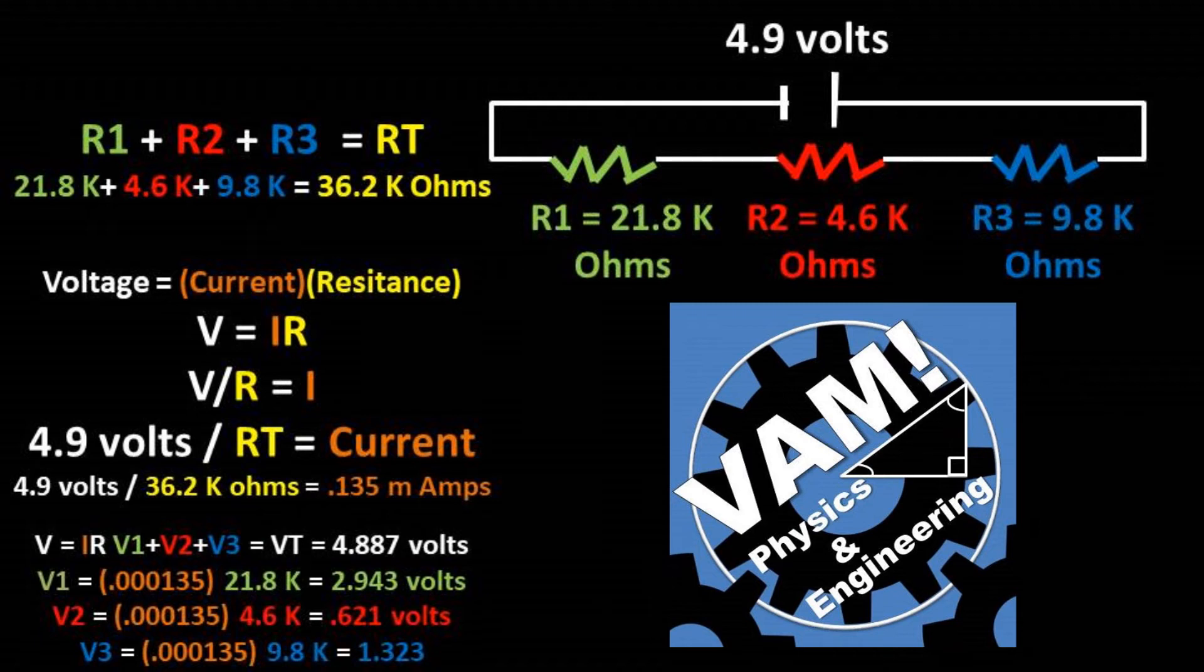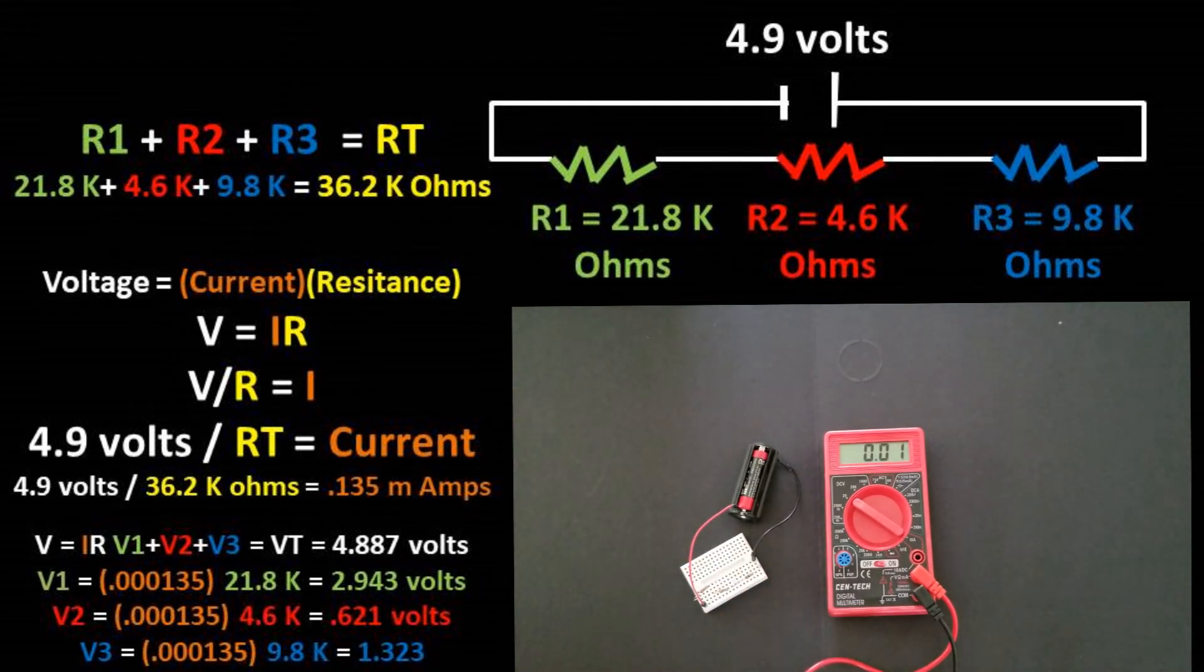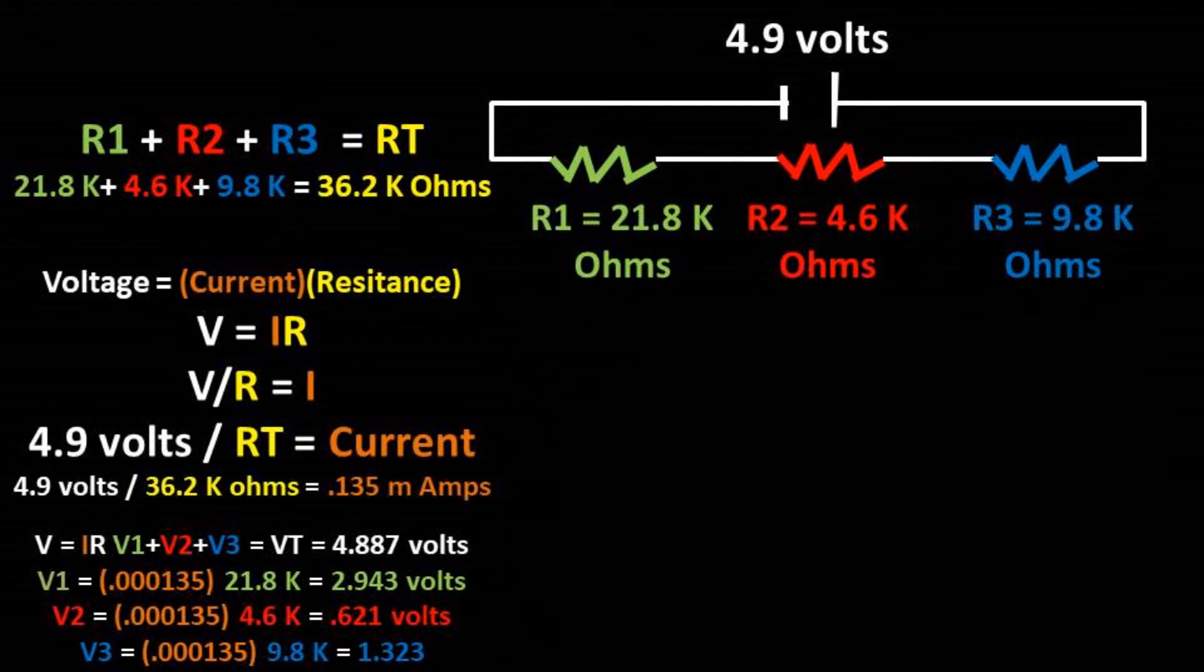To check ourselves, let's add up the voltages and see how close we are to the voltage of the total circuit. We get a total calculated voltage of 4.887 volts. This is close to the actual value, but may not be exact due to rounding.